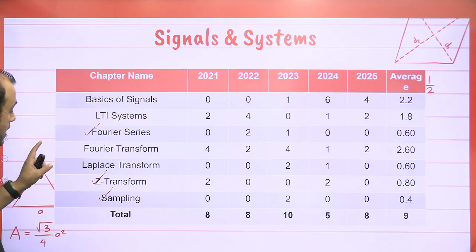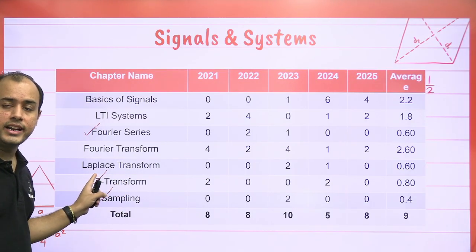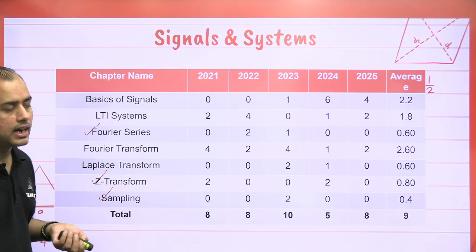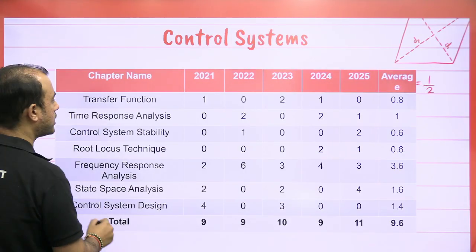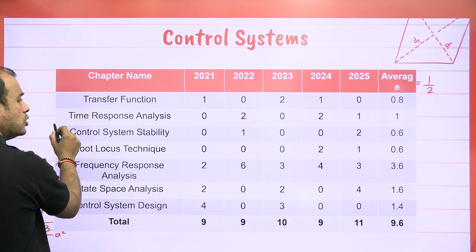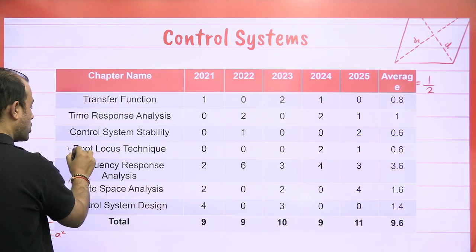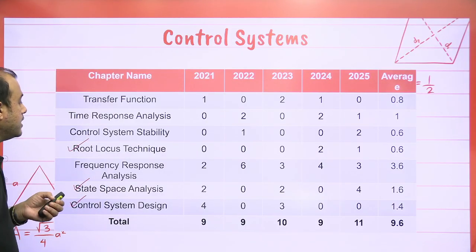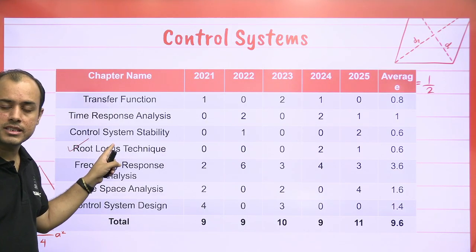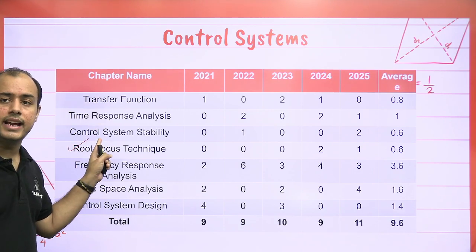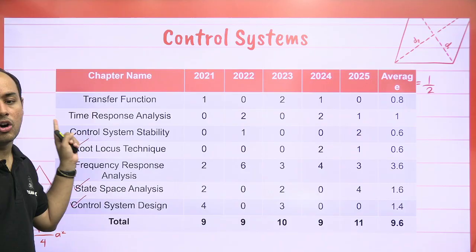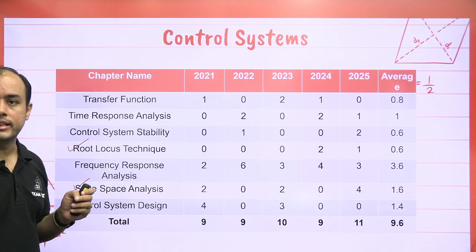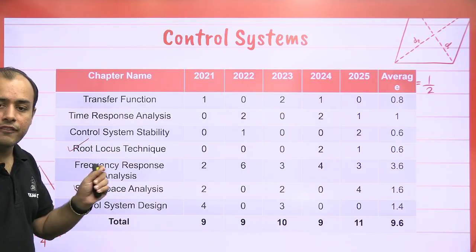Even though Laplace has low weightage, I am not asking you to skip it because it will be used in Control Systems. In Control Systems, you can skip Root Locus technique and State Space Analysis and Design. I am not asking you to skip Stability Routh Criteria because it is a very fundamental criteria on which the rest of the chapters are based. Time Response is important.